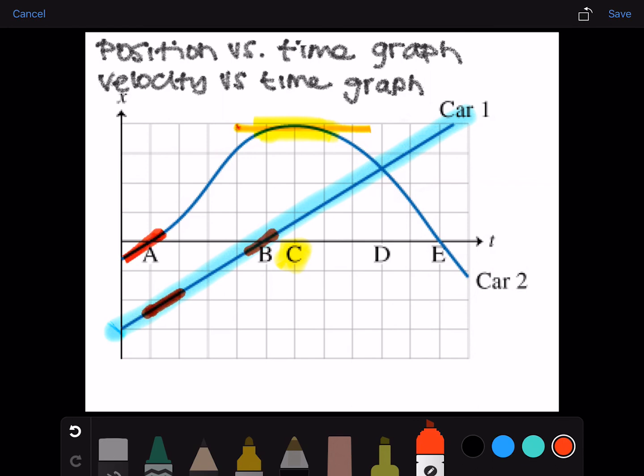At time B, this one's increasing, this one's about here. At C, this one's still increasing, this is zero. At D, this is still increasing, this is now decreasing. And at E, increase, decrease. So the only time they're about the same is at time A.